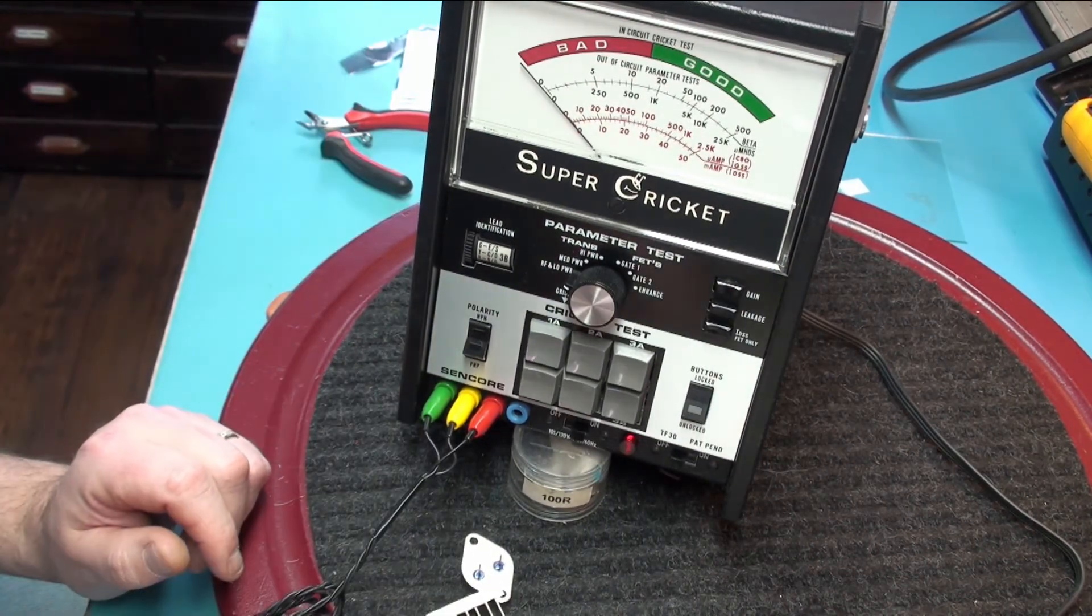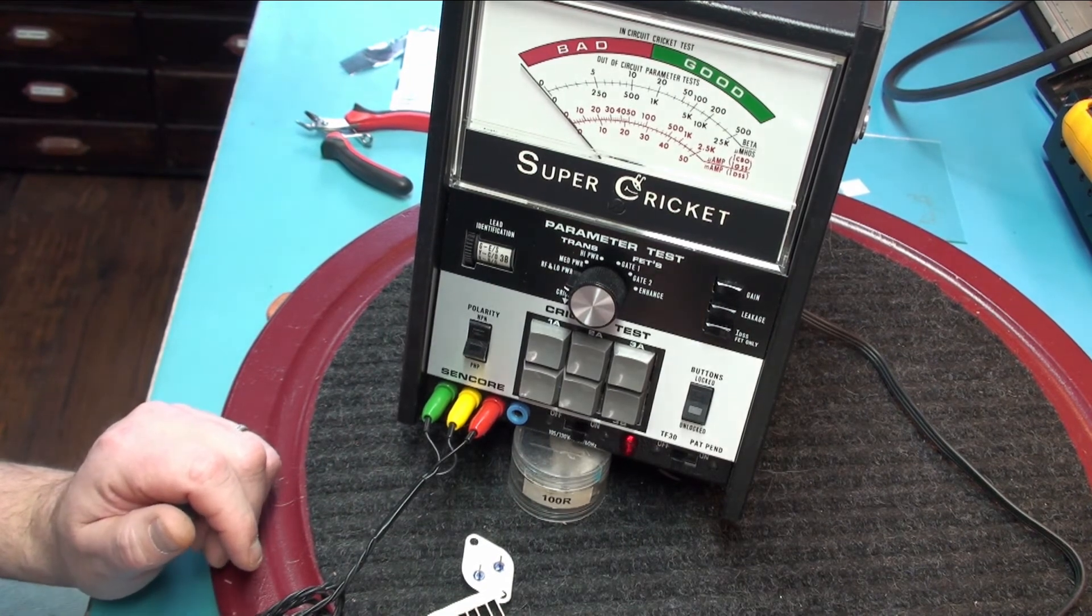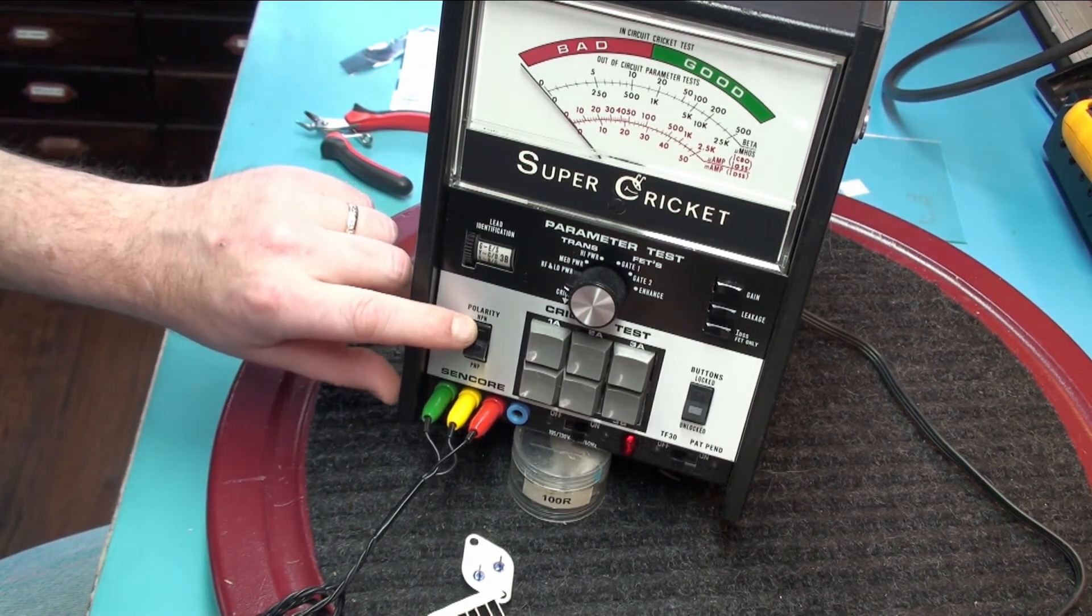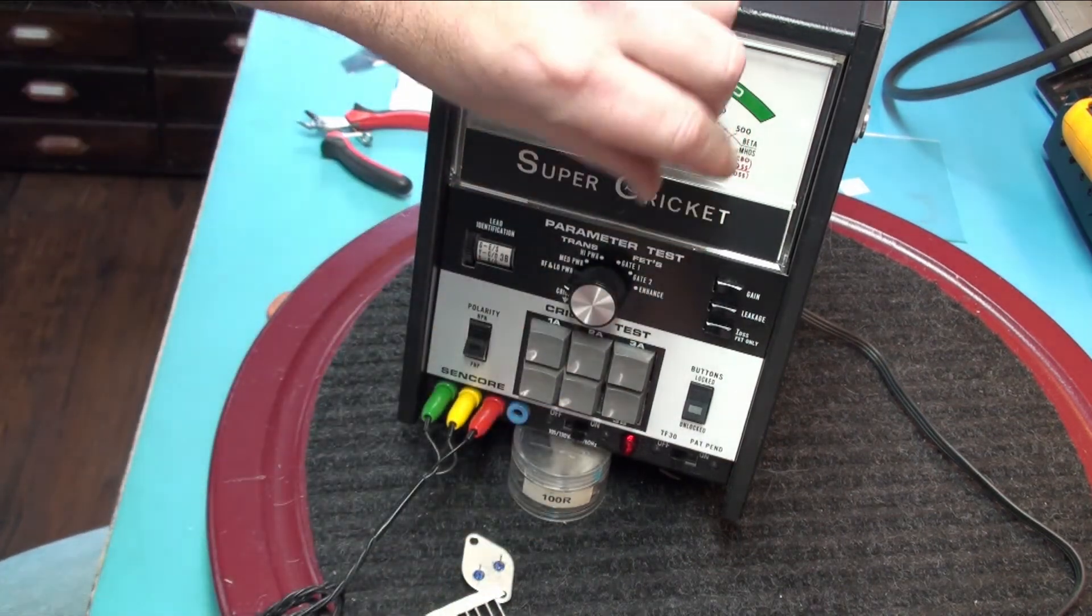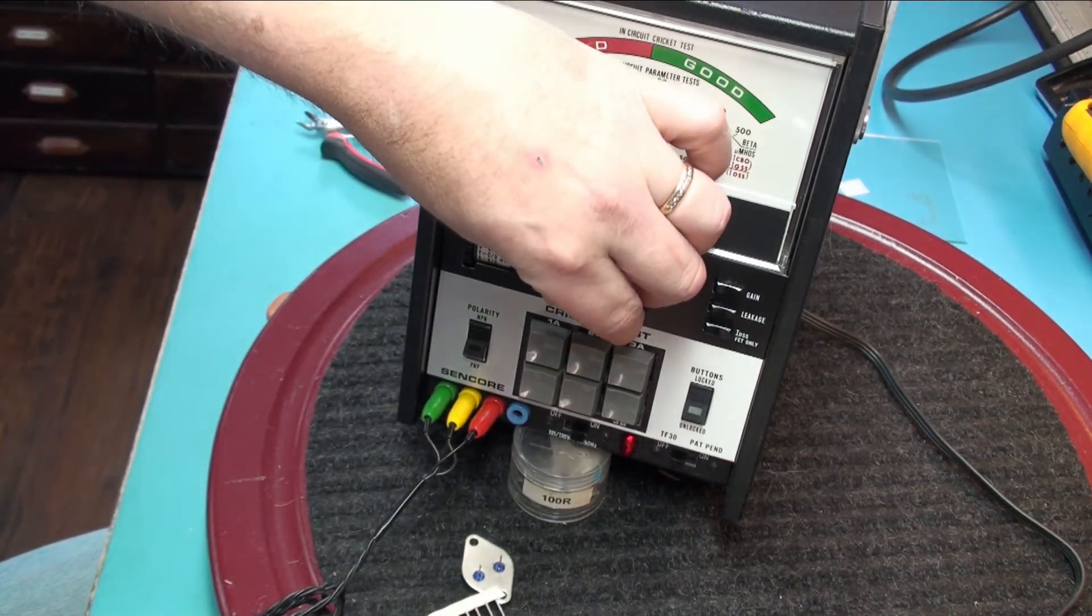Now for testing diodes, the manual says to set the polarity to NPN. We are going to set the parameter test button to RF low power.